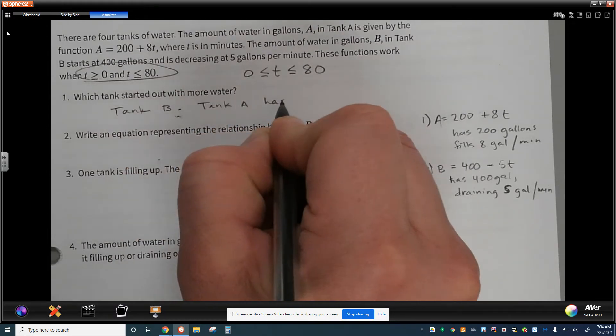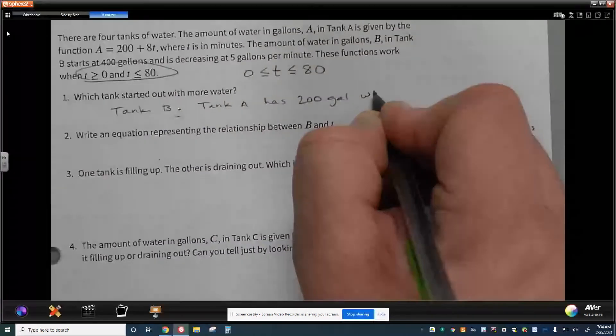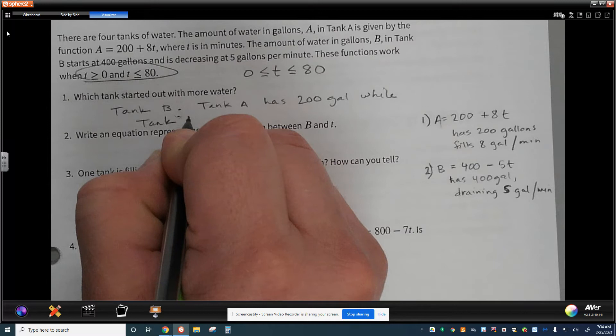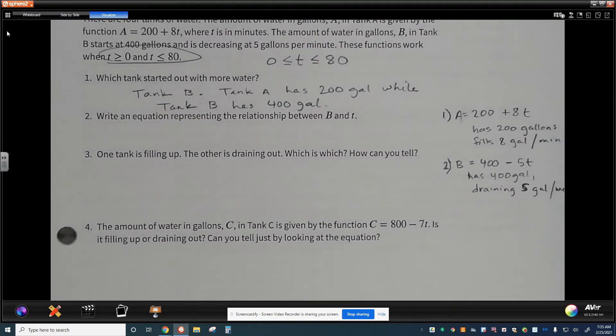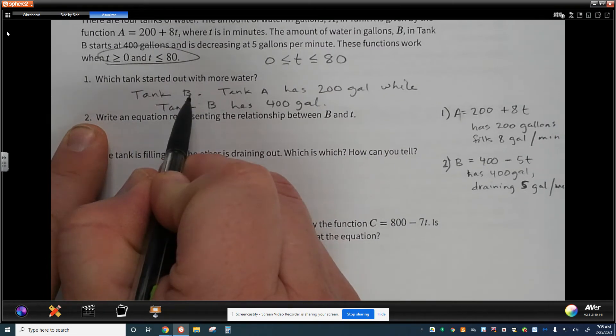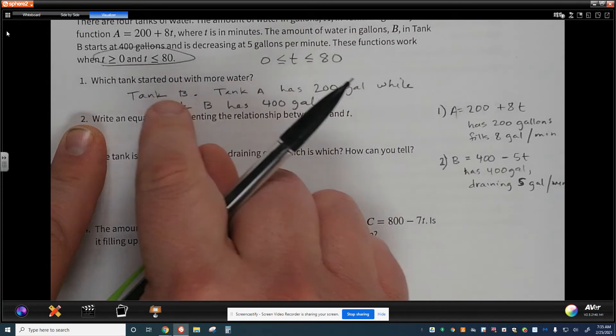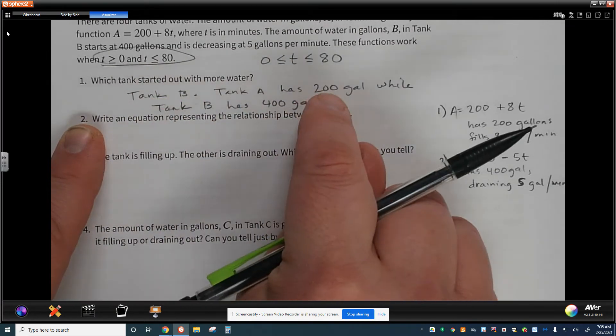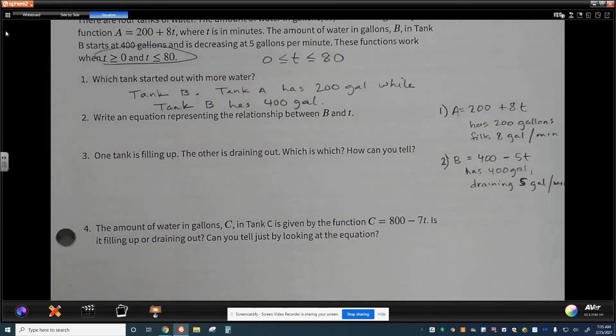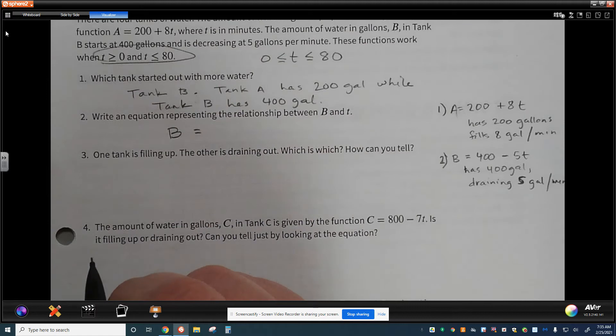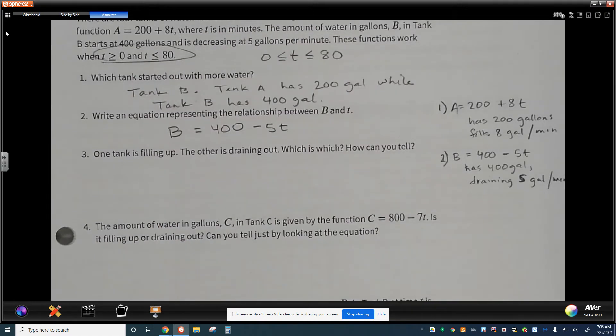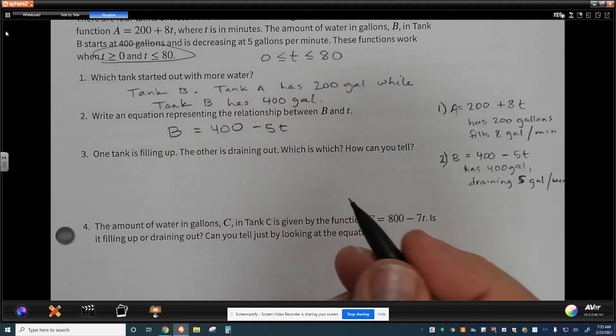Tank B. Tank A has 200 gallons, while tank B has 400 gallons. Now, it might seem like that's kind of redundant and like it's kind of obvious. But what I'm doing here is I'm making a claim that tank B is the one that started out with more water. And then I'm providing evidence for my claim. So my claim is tank B, evidence is tank A has 200, B has 400. So it's pretty obvious which one it is by putting the evidence. Write an equation representing the relationship between B and T. I kind of already did that right here. Not kind of, I did do that. The total volume in water, the amount of gallons is B. The tank has 400 gallons in it. And it's draining 5 gallons per minute. So it says one tank is filling up, the other is draining out. Which is which? How can you tell?